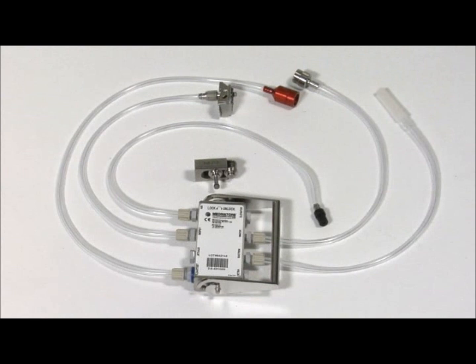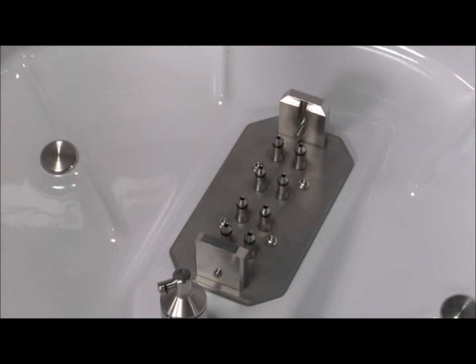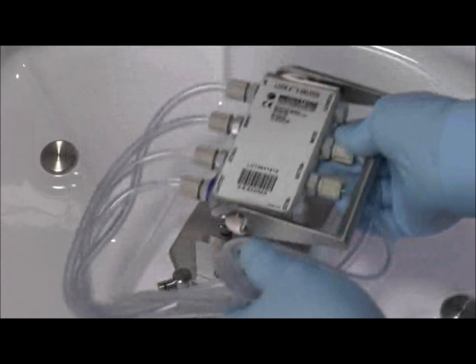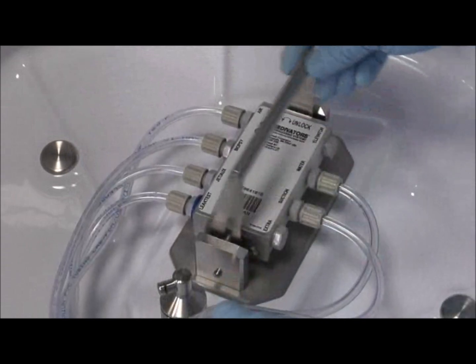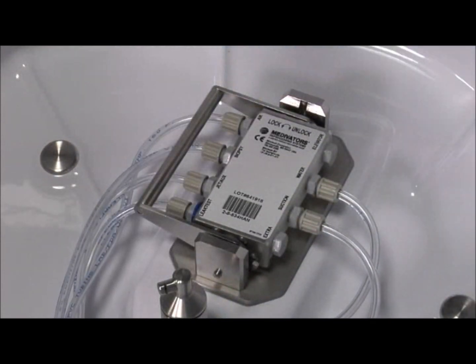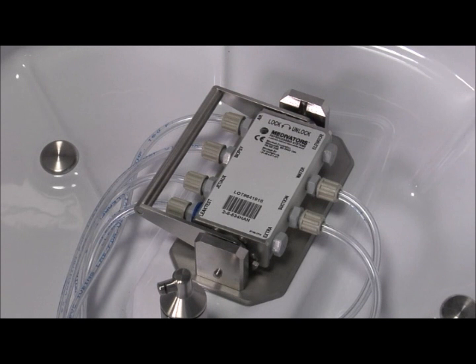Insert the hookup connector block. Place the block lightly over the manifold, making sure none of the hoses run or are pinched under the block. Lock the connector block in place by moving the handle to the left.